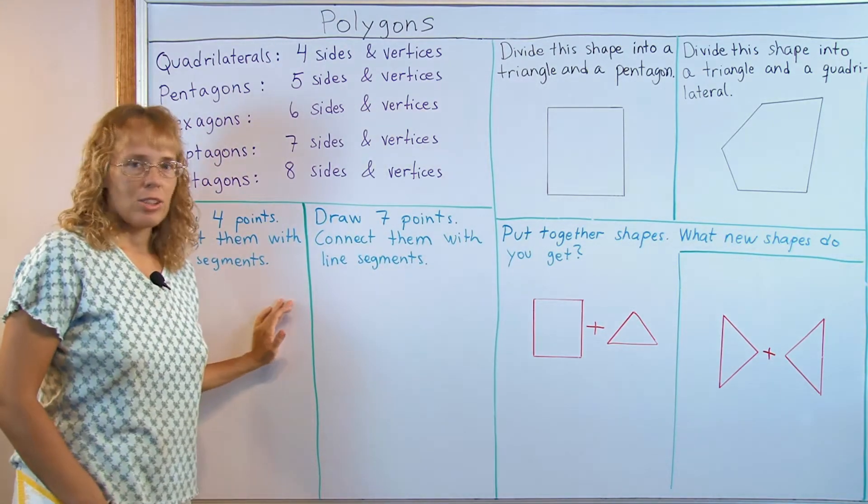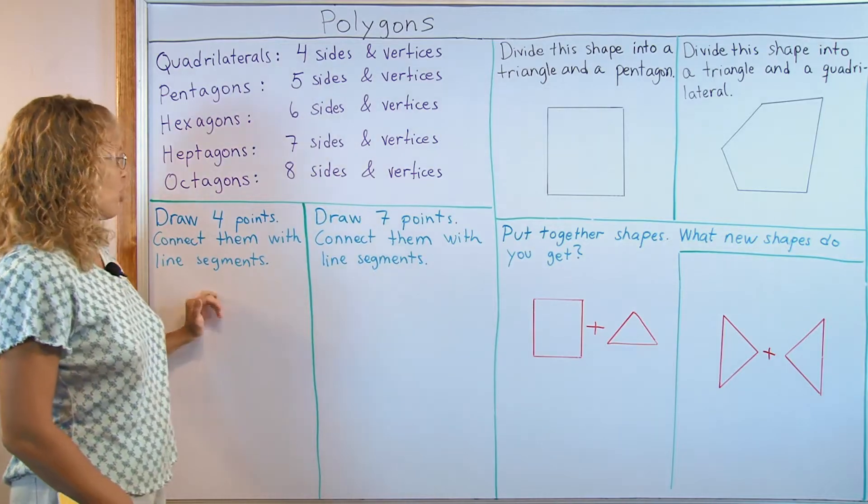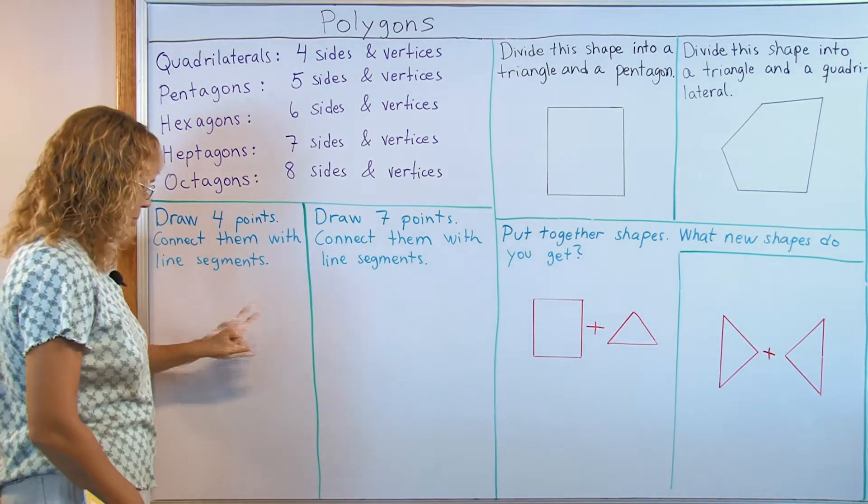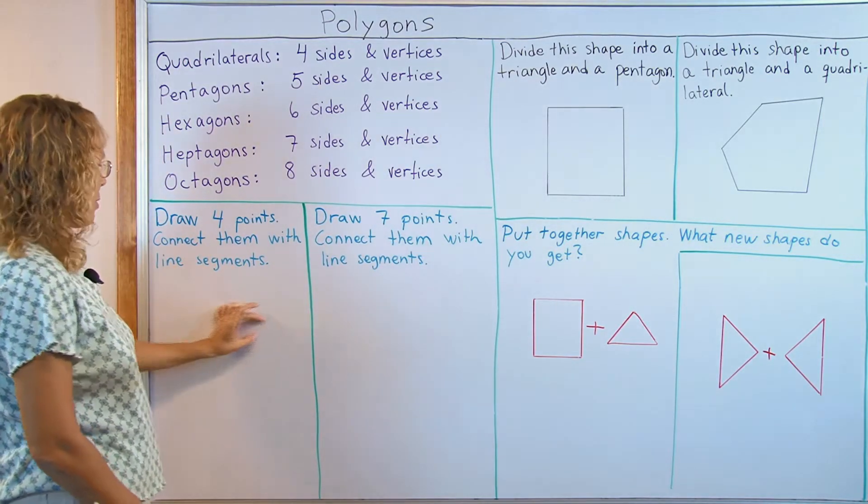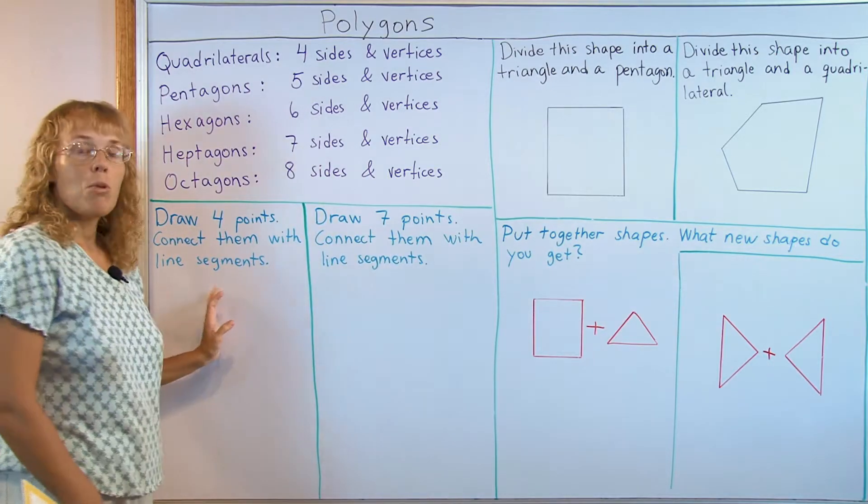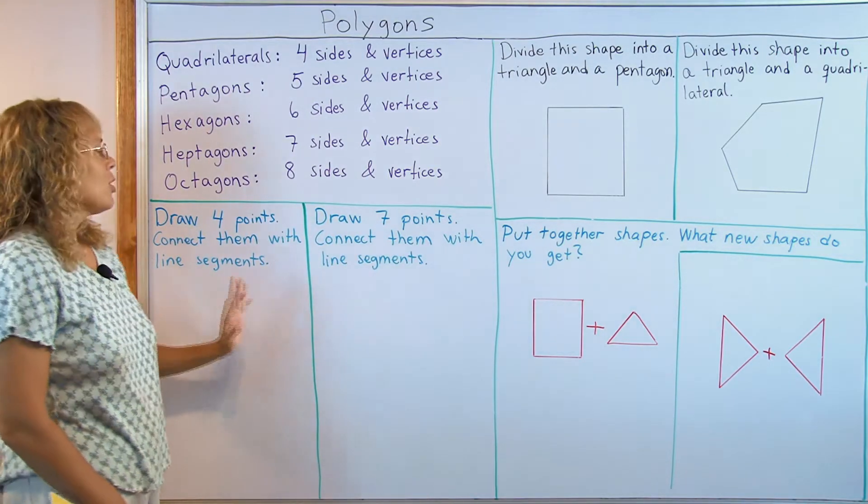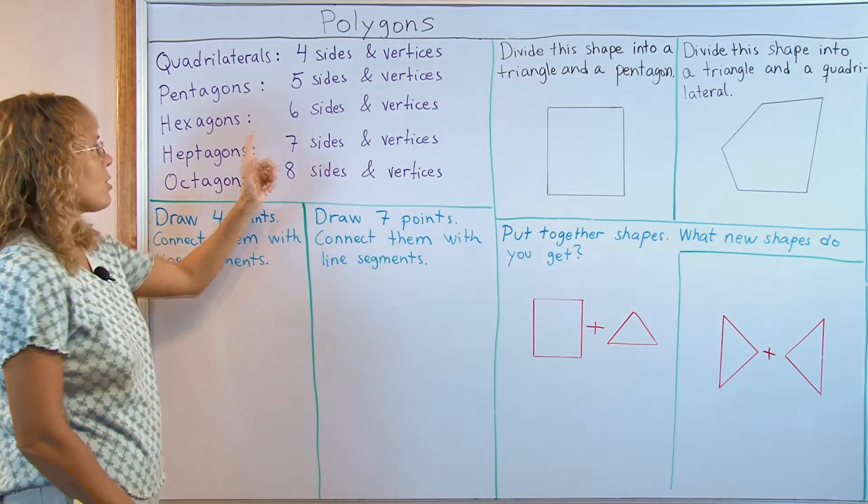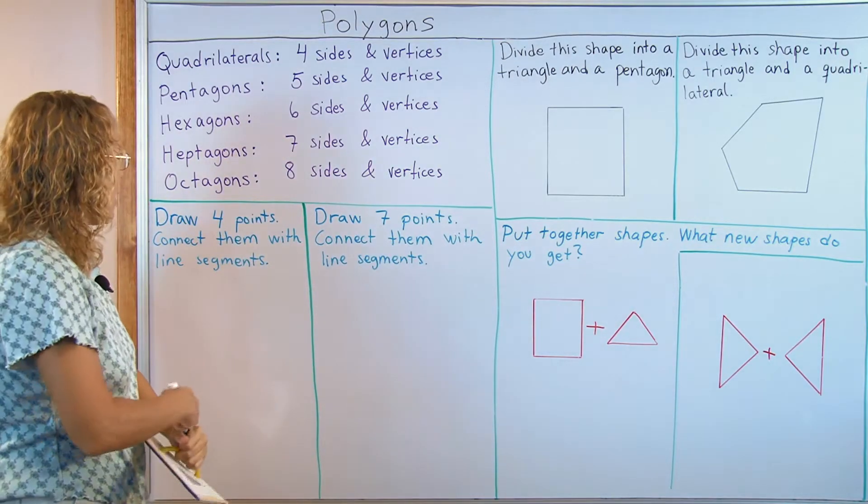One fun exercise I like to use is to let children draw four points anywhere on the paper and then connect them with line segments and the question is what polygon do you get? And do the same for draw five points, six points, seven points, eight points. So let's just try.